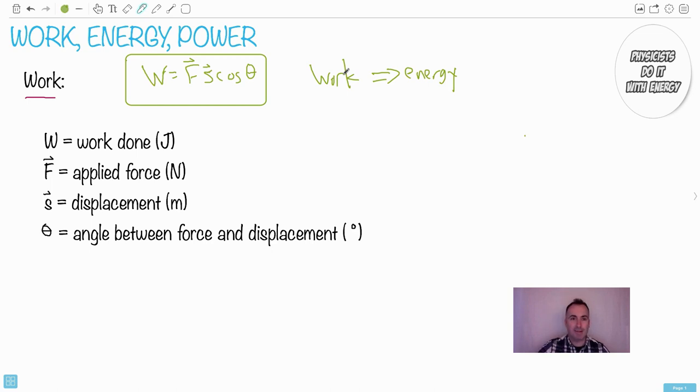The reason is because the angle between my applied force this way and my displacement this way is 90 degrees. Cos of 90 is zero. Therefore, there's no work done. So it's a little bit sneaky with work, but the angle is important if they're 90 degrees or zero degrees to each other.